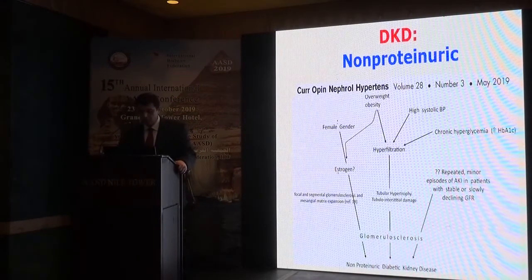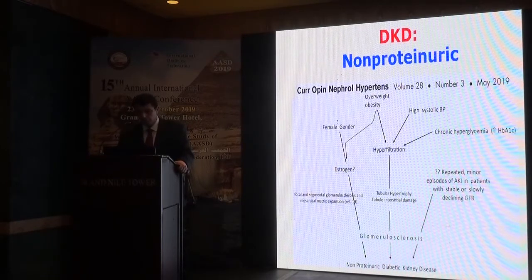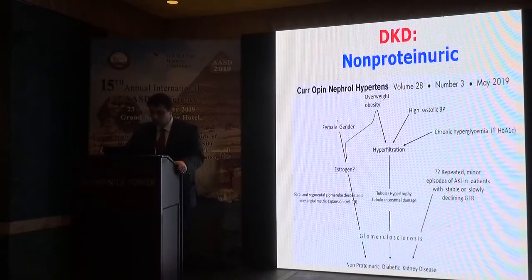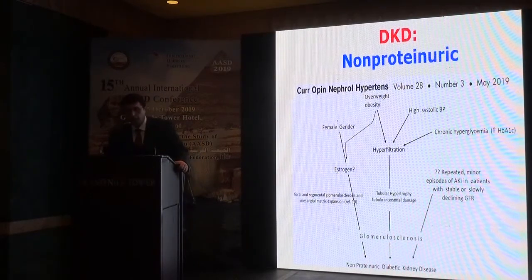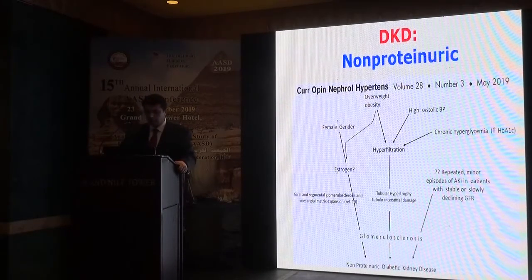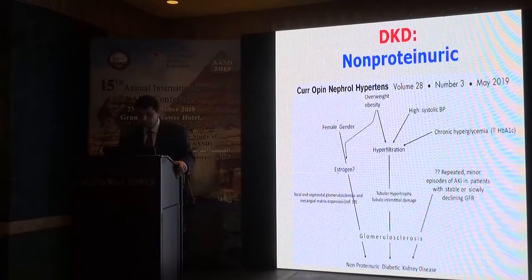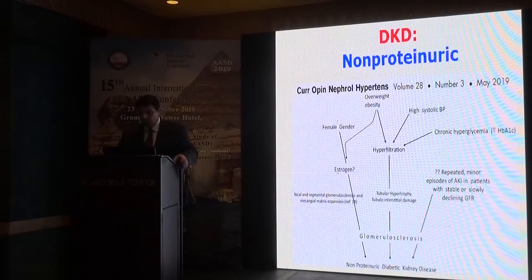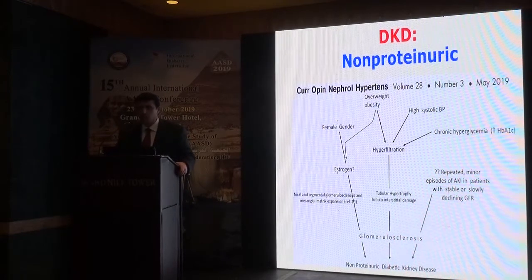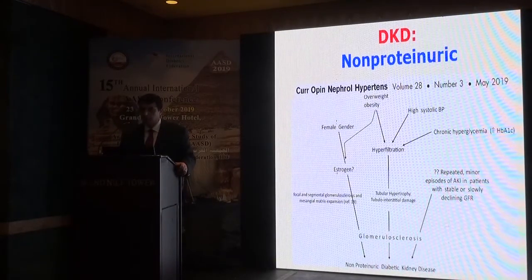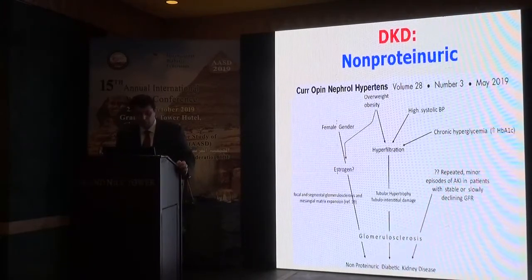Regarding pathophysiology for non-proteinuric diabetic kidney disease: female gender is at higher risk because estrogen may promote glomerulosclerosis. Overweight causes hyperfiltration with tubular hypertrophy and tubular damage, producing glomerulosclerosis. High systolic blood pressure causes hyperfiltration through the same mechanism. Chronic hyperglycemia also causes hyperfiltration. Additionally, repeated minor episodes of AKI in patients with stable or slowly declining GFR may lead to glomerulosclerosis and progression toward end-stage kidney disease. Renal vascular sclerosis is also a contributing mechanism.